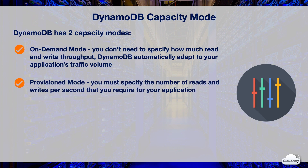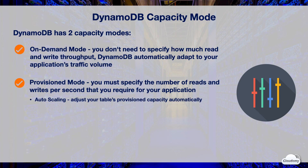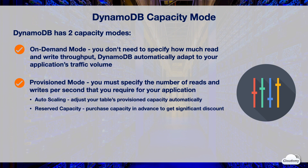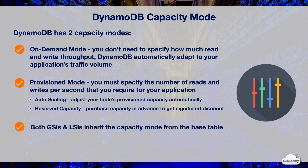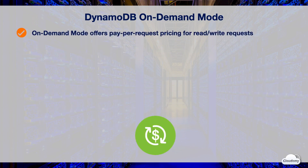With provisioned mode, you must specify the number of reads and writes per second that you require for your application. You can also use auto scaling to automatically adjust your table's provisioned capacity in response to traffic changes. You can purchase reserved capacity in advance and get significant cost savings compared to standard provisioned capacity rates. Choose provisioned mode if you have an application with predictable workloads or consistent traffic. When you choose the read/write capacity mode for the base table, both GSIs and LSIs inherit the capacity mode from the base table.